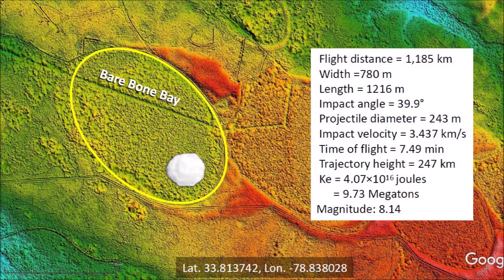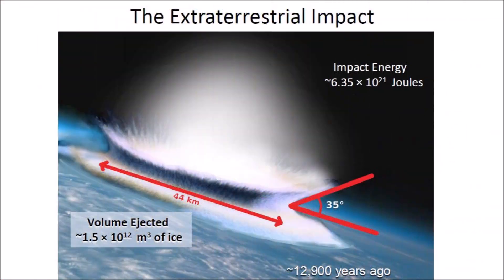Bays with a length larger than one kilometer are made by impacts with energy equivalent to many megatons of TNT. The law of conservation of energy allows us to add the energies of all the bays to estimate the energy of the extraterrestrial impact. The combined energy of all the Carolina Bays corresponds to an impact by an asteroid with a diameter of three kilometers.